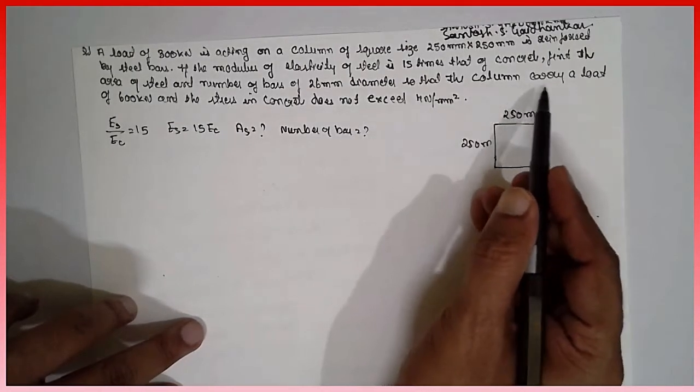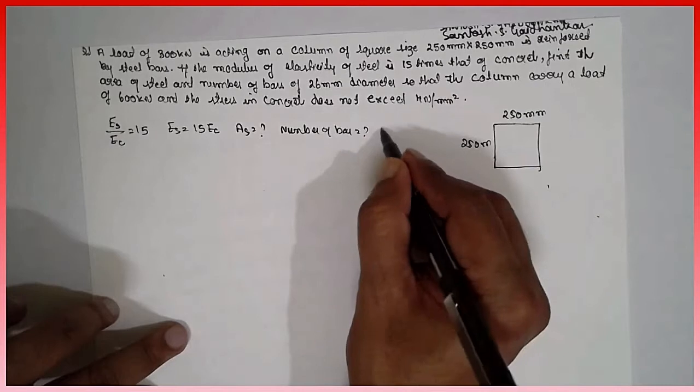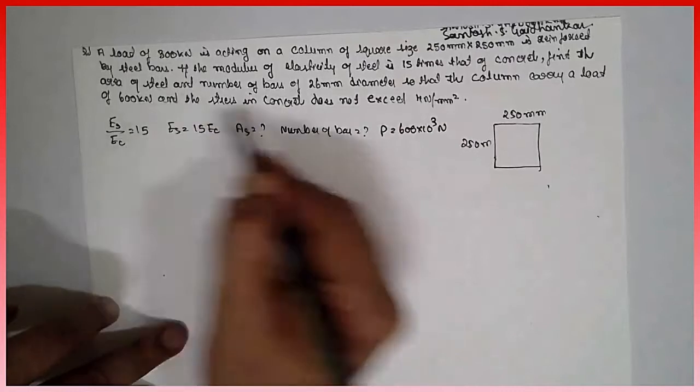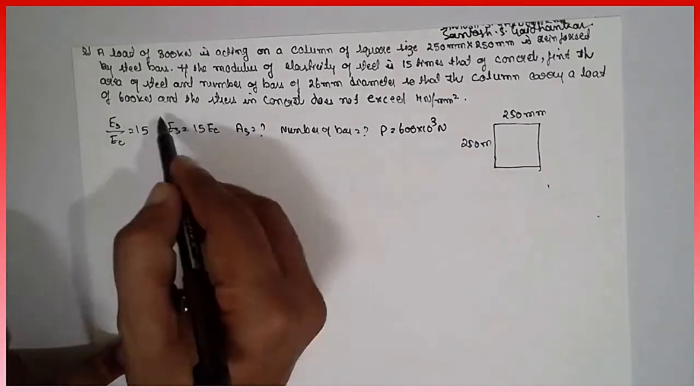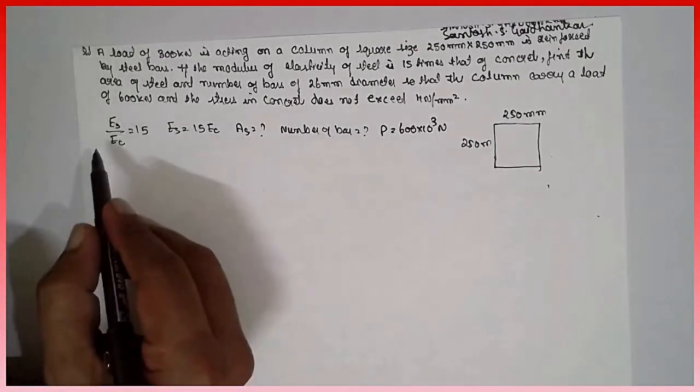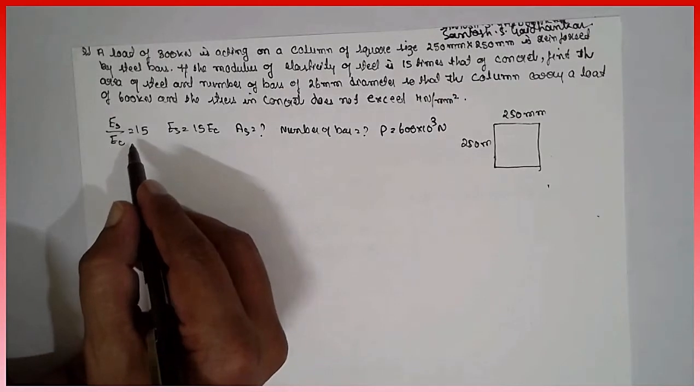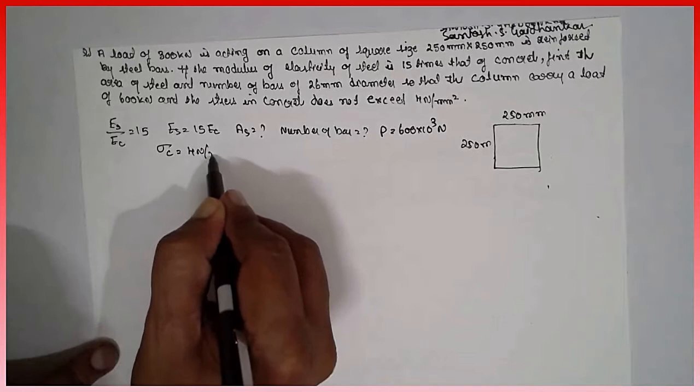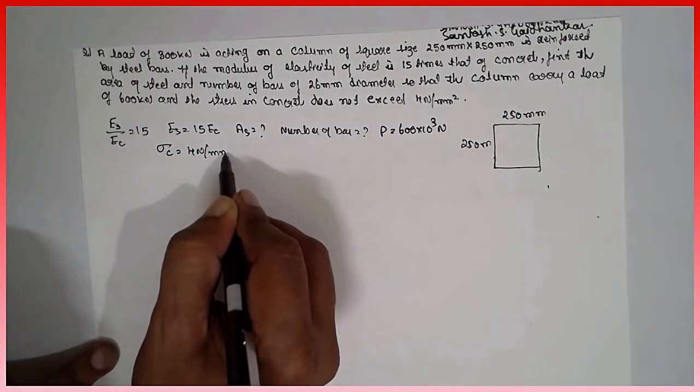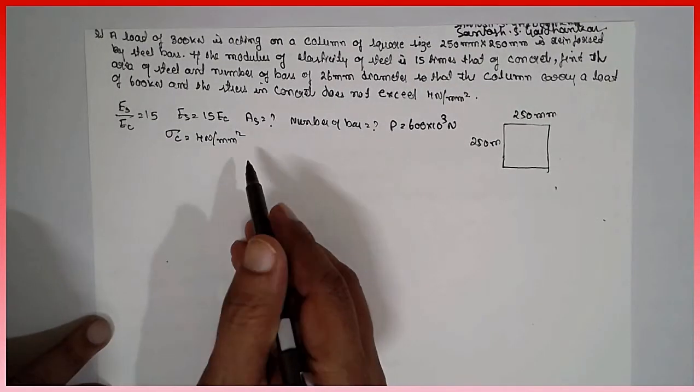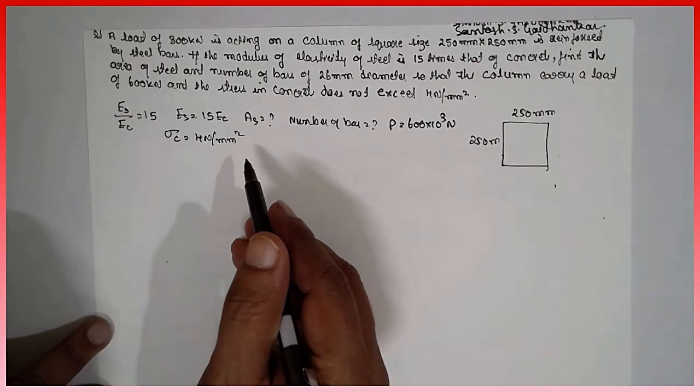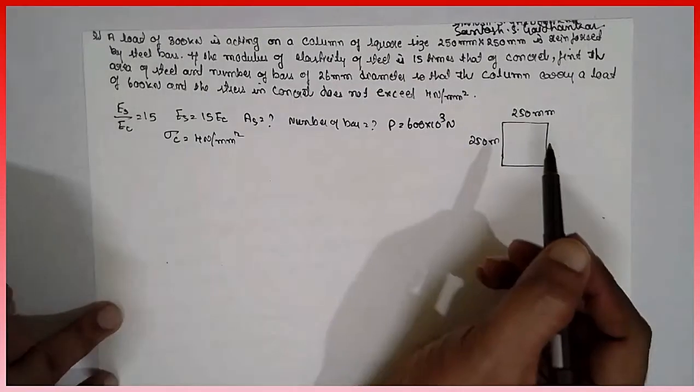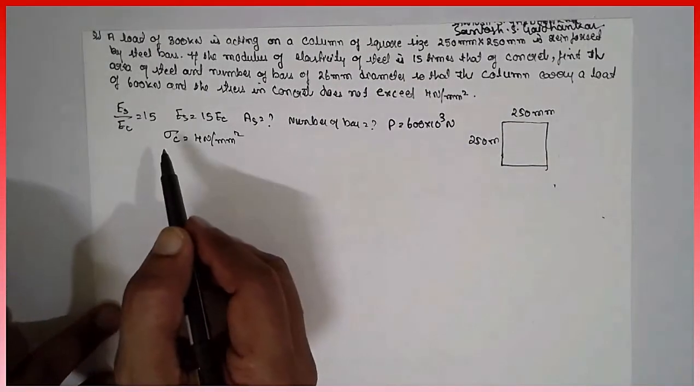So that the column carries a load of 600 into 10 raise to 3 N. It is kN into 10, I have converted into N. And stress in the concrete, stress in the concrete does not exceed sigma c is equal to 4 N per mm square. They have given the diameter, single diameter they have given it.